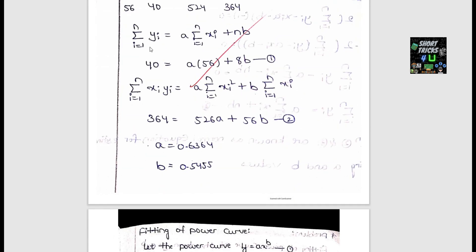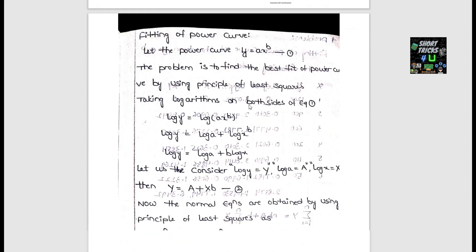The normal equations involve: Σy = na + bΣx and Σxy = aΣx + bΣx². For the power curve, the straight line model y = ax + b is used as a basis, and the dual power transformation is applied.